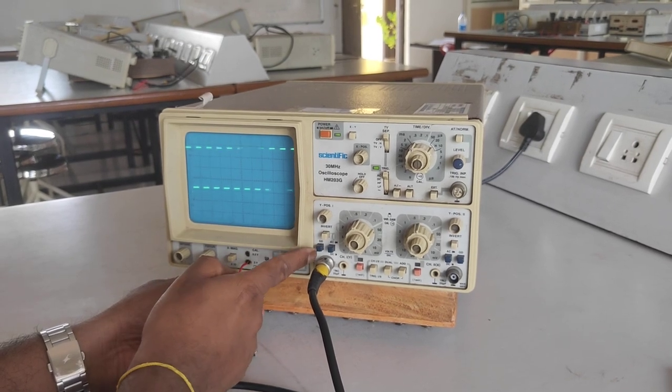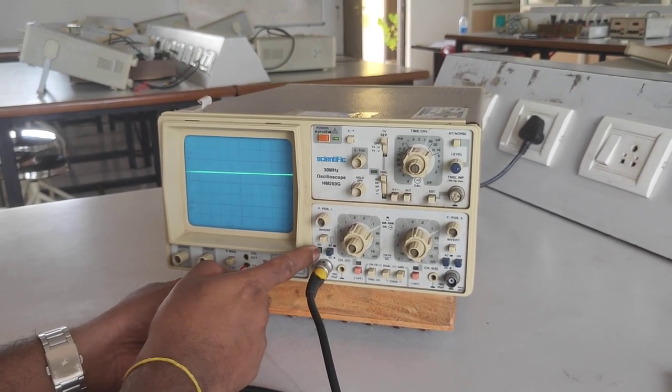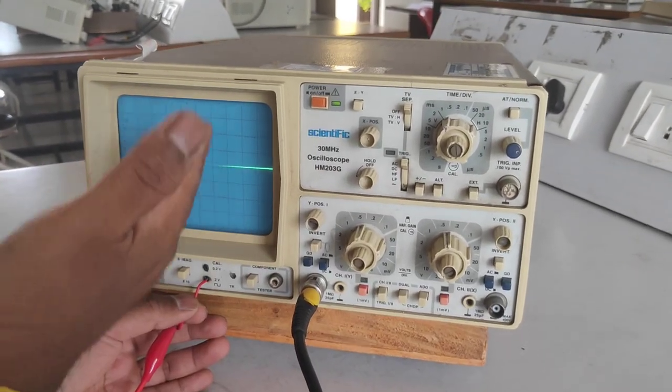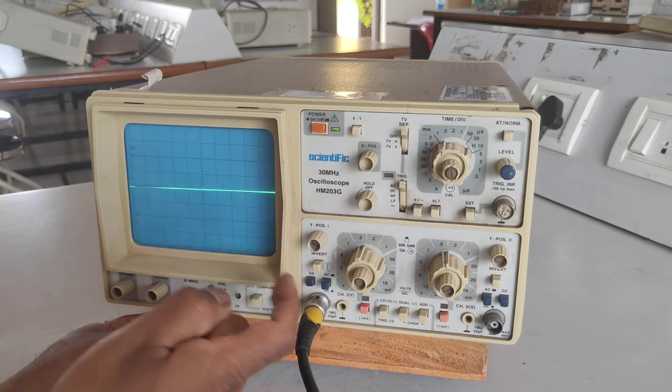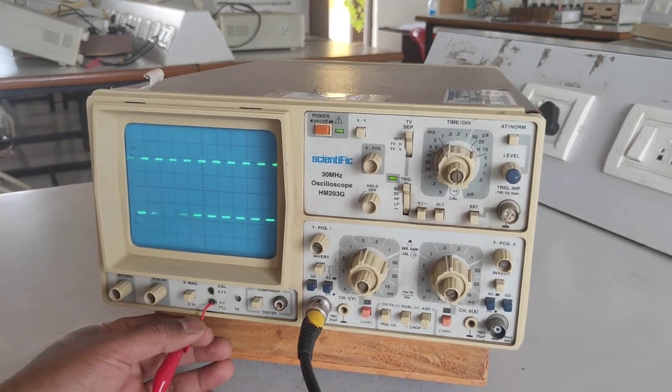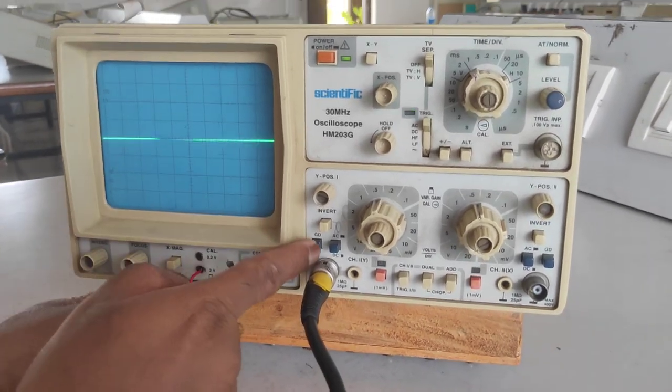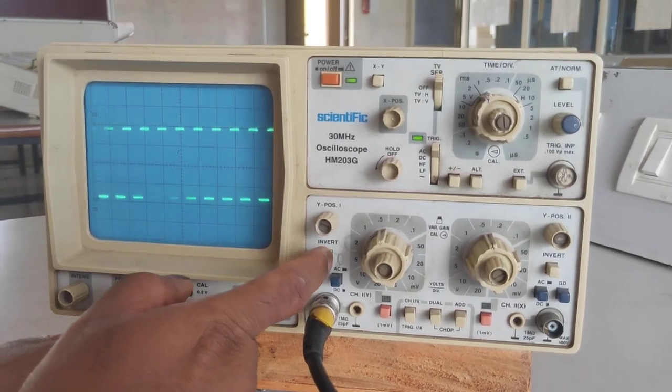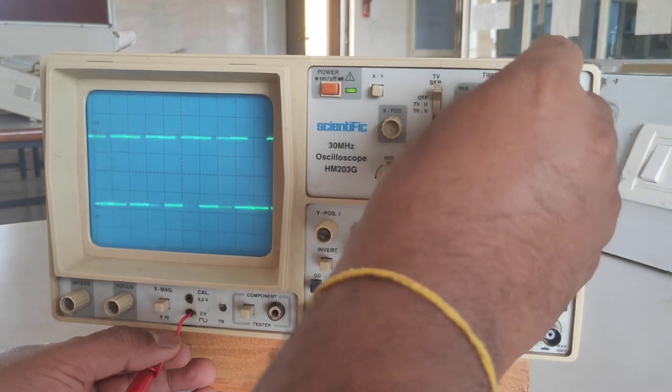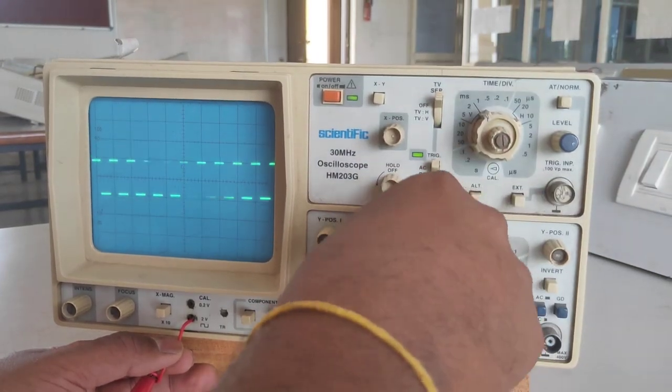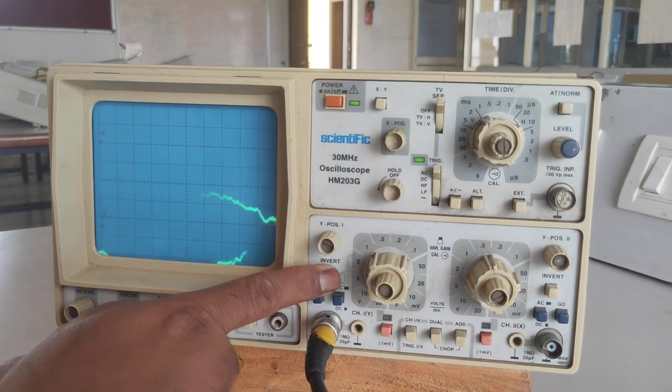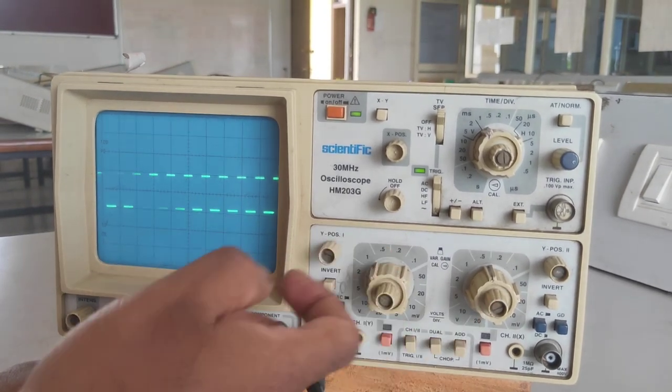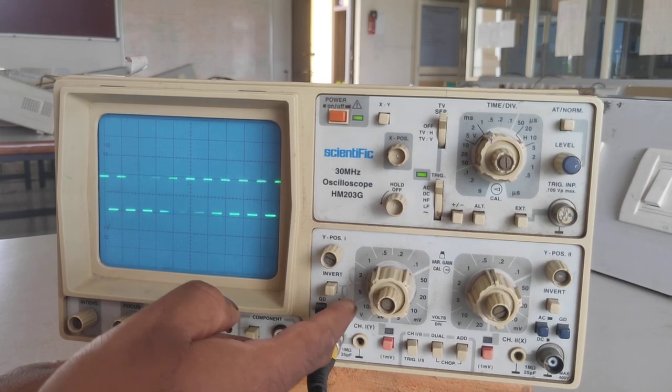This is how you have to check the probe with the help of this calibration point. And one more thing - if you press this ground button, you are getting a straight line. The signal has been grounded. It should be in release condition. Observe - this is the ground button. And I'll show you the invert point. Since it is a square wave, you are not getting that accurately the inverted signal. I will show you with the help of sine wave. This invert point means 180 degrees out of phase. These are the functions you have to remember - different functions of different buttons.